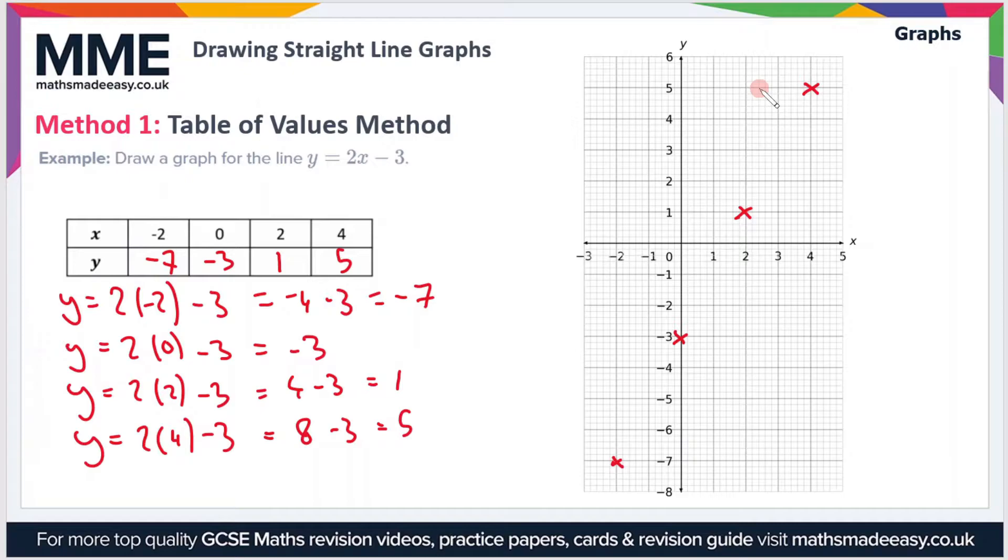Now all we have to do is draw the line through all of these points. If you use a ruler like I'm doing here, try and be as precise as possible. You should get a line that looks like this. As usual we'll add a label to the graph, so that is the line y equals 2x minus 3.